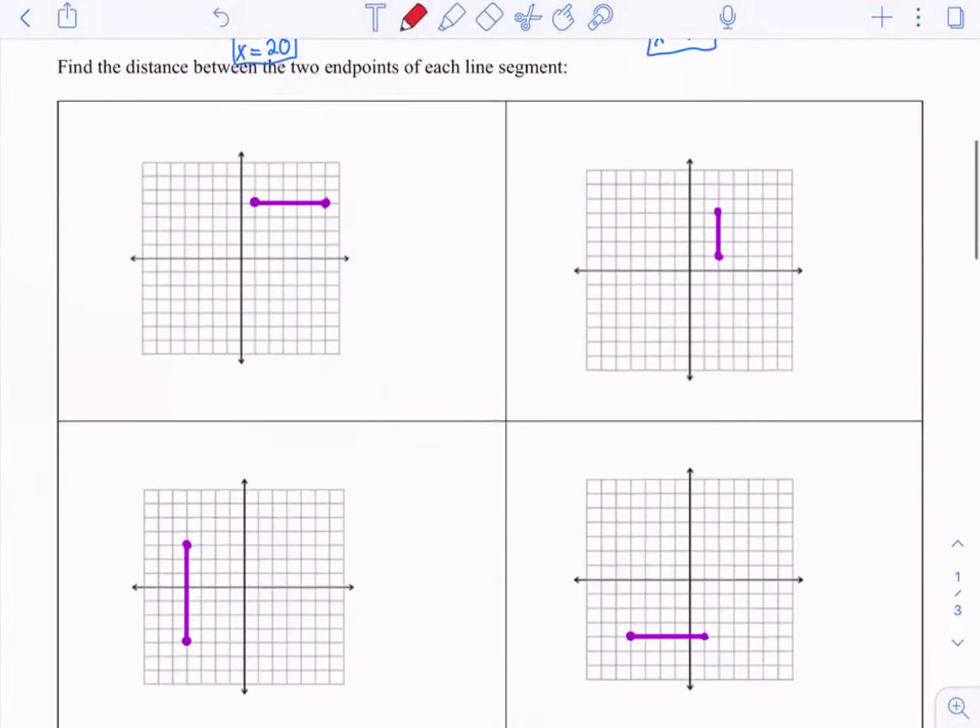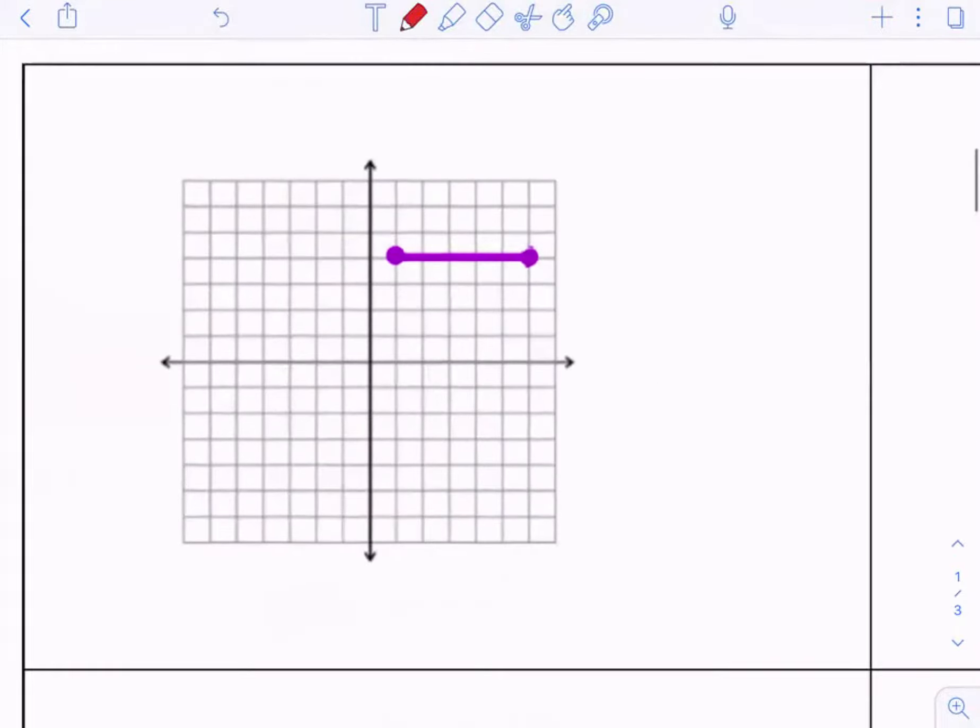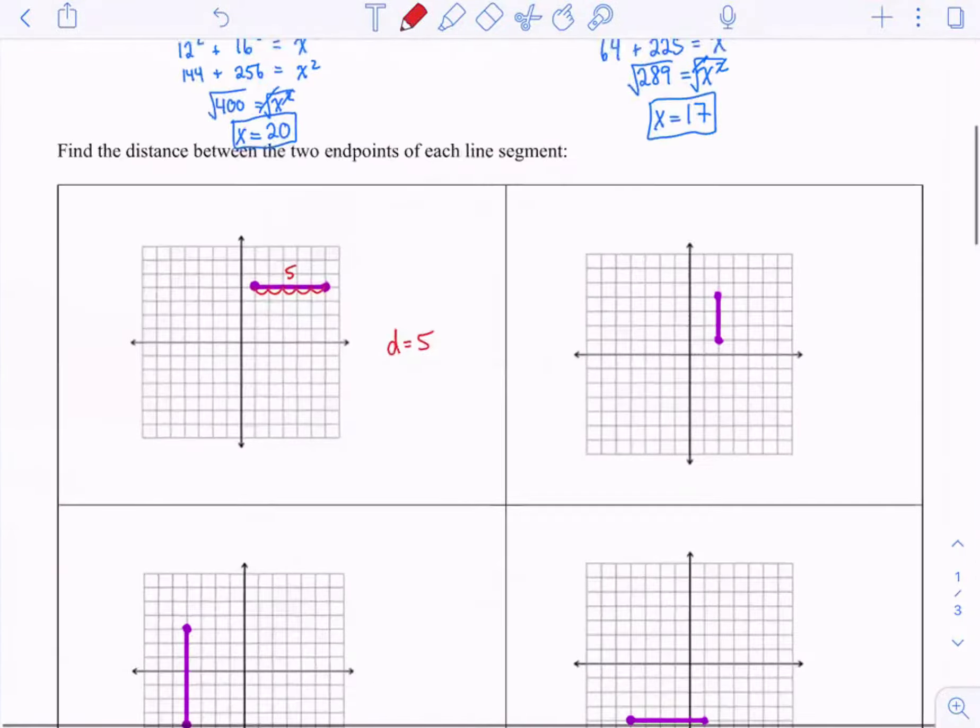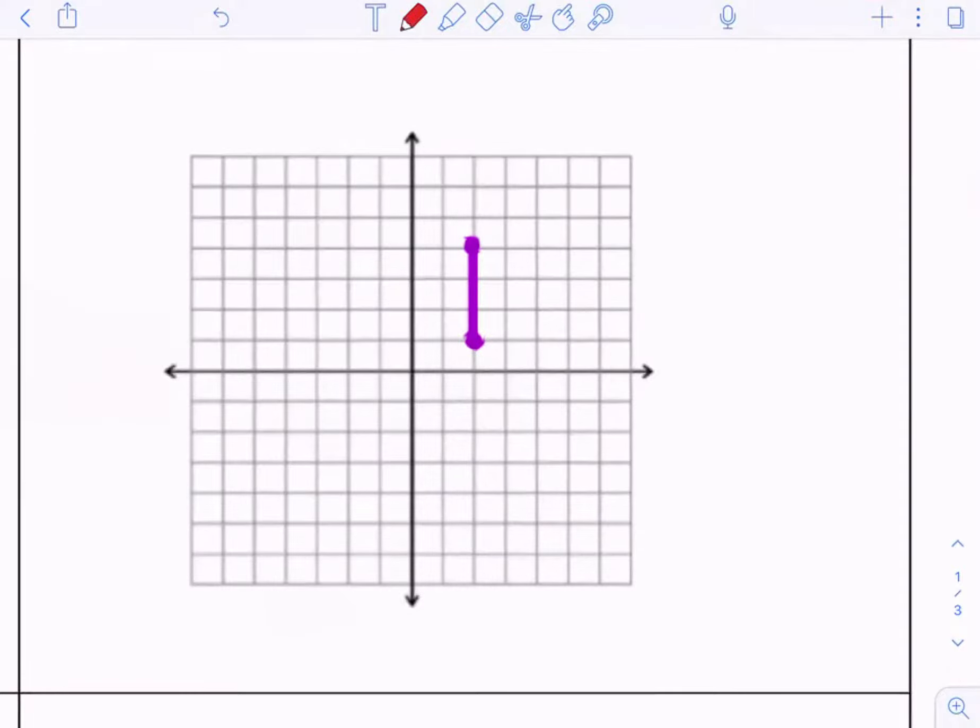So can we find the distance between these two points starting with this example right here? That should be simple. We can count here. One, two, three, four, five spaces. So the distance here is five. Same thing with something like this. I can count one, two, three. The distance here is three.